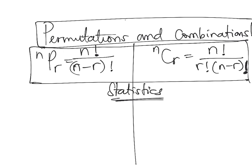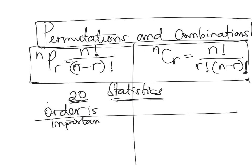For example, if you have 20 people and you're trying to figure out how many different combinations you can get to pick a president, a vice president, and a treasurer of an organization, whenever order is important, we use permutation. When order is important.